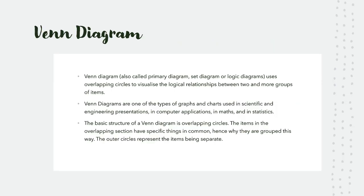A Venn diagram, also called a primary diagram, set diagram, or logic diagram, uses overlapping circles to visualize the logical relationships between two or more groups of items. Venn diagrams are one of the types of graphs and charts used in scientific and engineering presentations, in computer applications, in maths, and in statistics. The basic structure of a Venn diagram is overlapping circles.